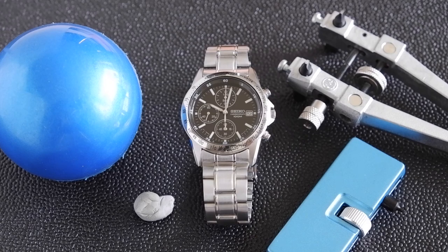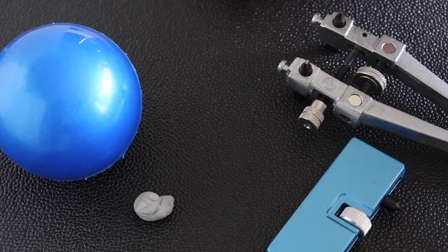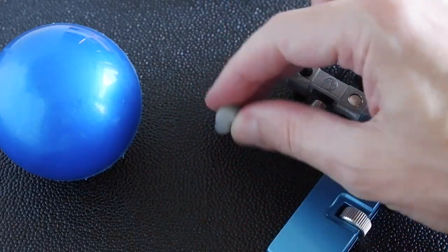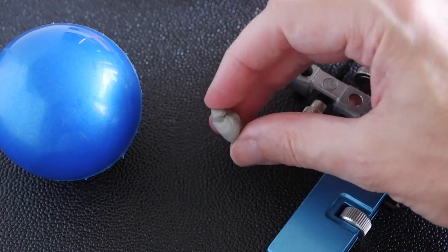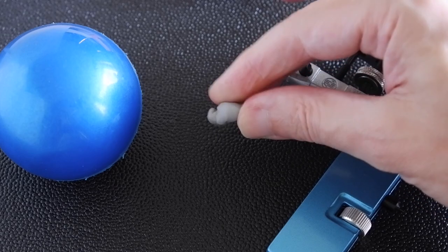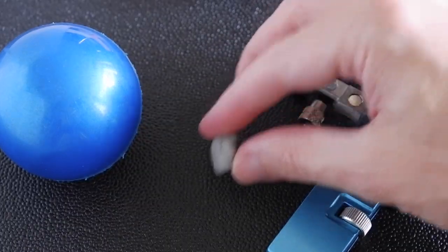I often wonder what's the difference between the different types of case back opener, and now we can find out. So I've got a selection here, and starting with the cheapest, I've got just a bit of Rodico or Blu-Tac. I've seen Spencer Klein use this in his videos. I think he loosens them first, so we're going to see just how good this is.